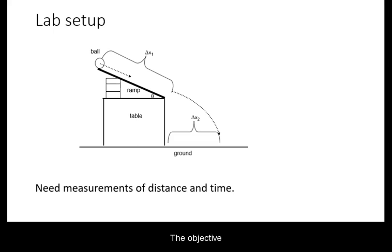The objective is to make measurements on the movement of the ball along the ramp which then can be used as input to calculate the horizontal displacement along the ground.